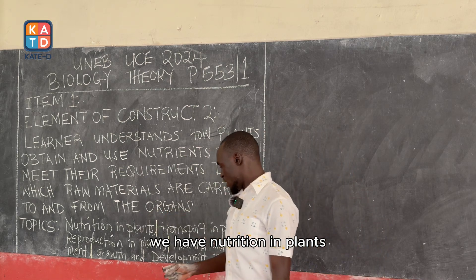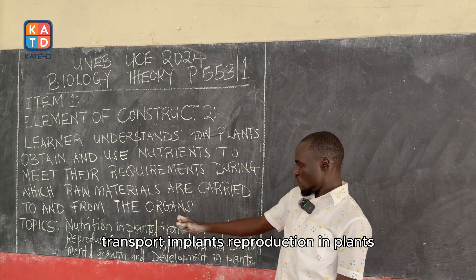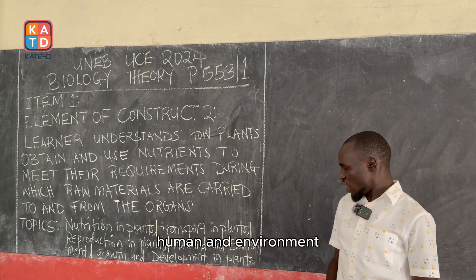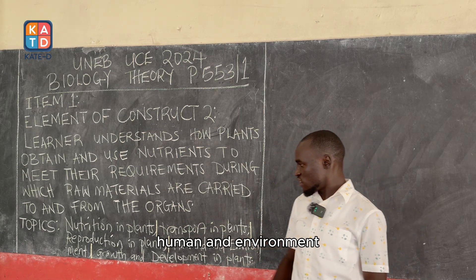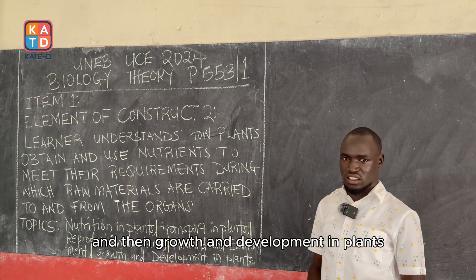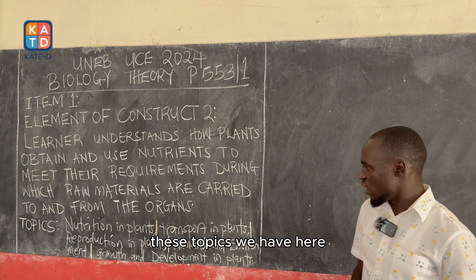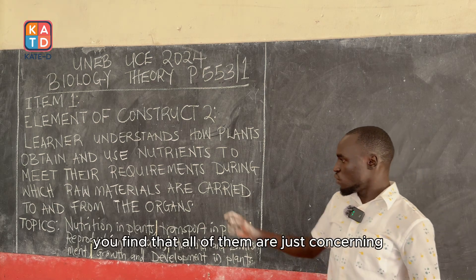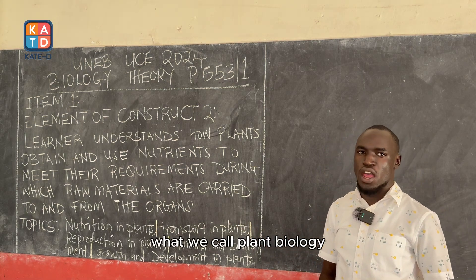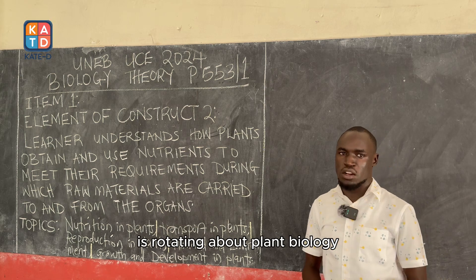This element of construct has five topics: nutrition in plants, transport in plants, reproduction in plants, human and environment, and growth and development in plants. All of these topics concern what you call plant biology — they are all rotating about plant biology.